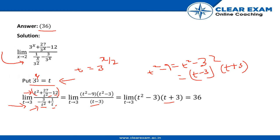So when we put t is equal to 3, we get 9 minus 3 into 3 plus 3, that is 6 into 6, that is 36. So the correct answer is 36. Thank you, hope you understood.